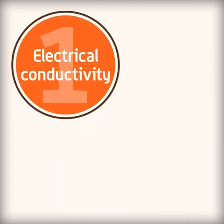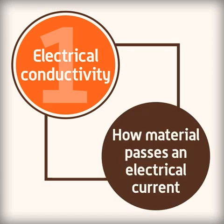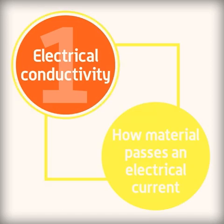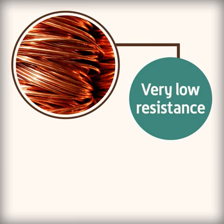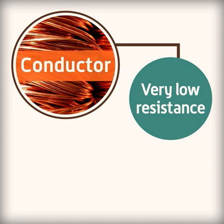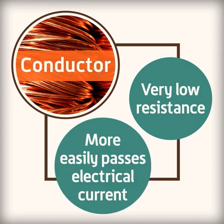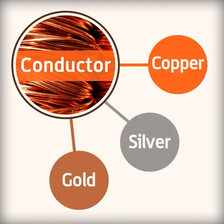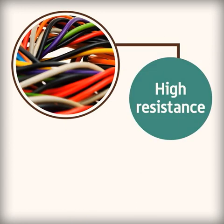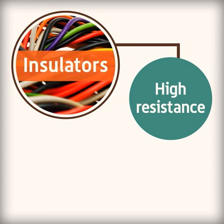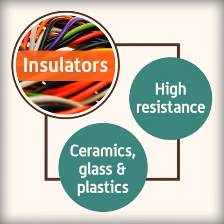Electrical conductivity is a measure of how a material passes an electric current. If the material offers a very low resistance, it is referred to as a conductor and more easily passes an electrical current. For example, metals are good conductors, especially copper, silver, and gold. Materials that offer a high resistance to an electrical current are known as insulators, which are usually non-metals such as ceramics, glass, and most plastics.